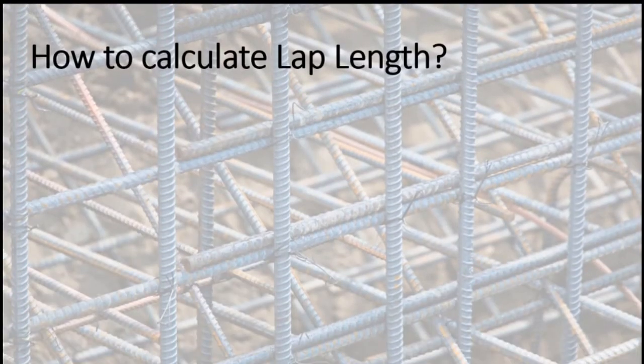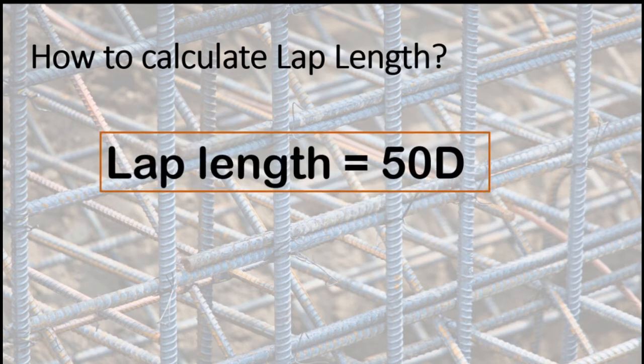How to calculate Lap Length? In general, lap length is equal to 50 times bar diameter when both bars have same diameter.